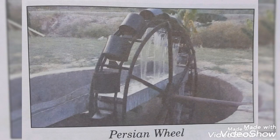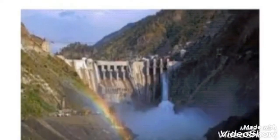Point number 3: Groundwater is not very deep in the plains. People easily dig wells to bring underground water to the surface. The water is drawn out using a water wheel, also known as a Persian wheel or Rahat.